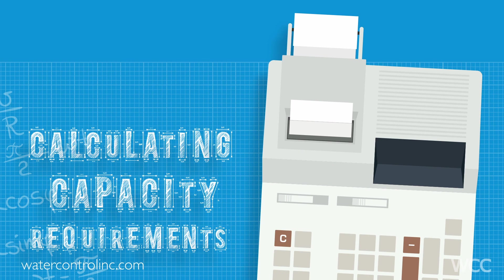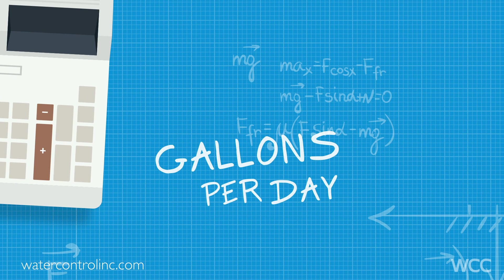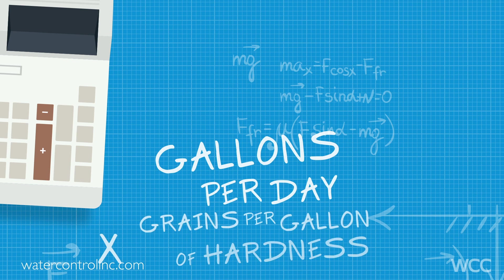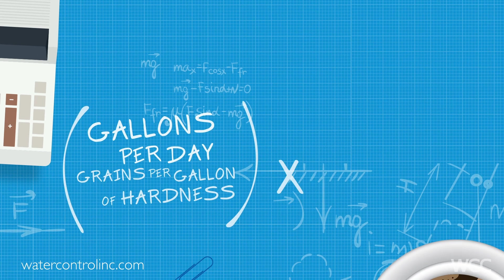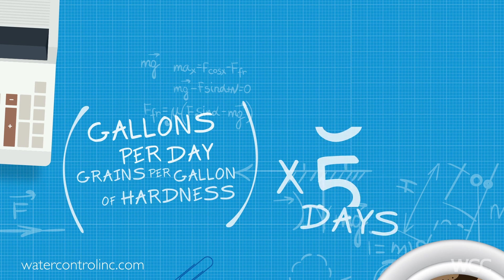Now it's time to see if you have enough capacity in your system. By capacity I mean: do you have enough ion exchange media in the softener tank or tanks to remove all of the hardness minerals passing through? Ideally we want enough capacity to soften for four, five, or six days between regenerations with the salt water from the brine tank. Calculating capacity requirements means estimating gallons per day of soft water usage, then multiplying by the grains per gallon of hardness in the water at that specific site, and then multiplying that by four, five, or six days.